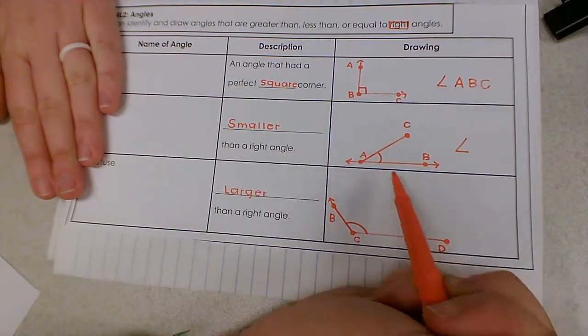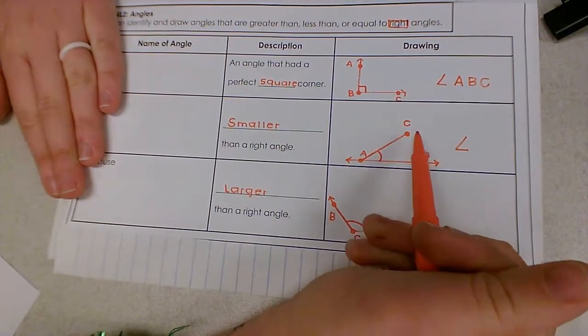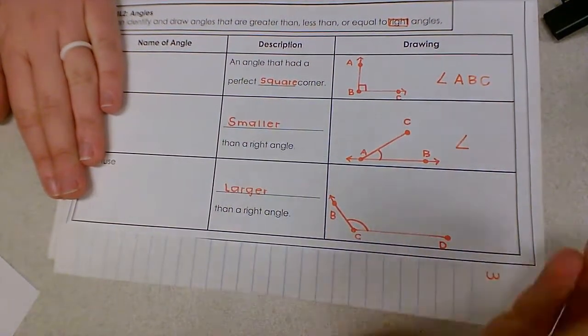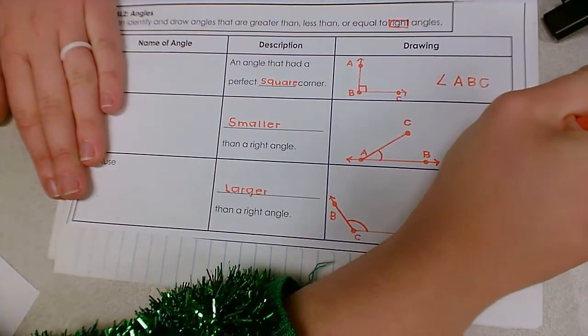Remember, we begin on one end to the other with the shared endpoint in the center. We can call this CAB or BAC. I'll call this CAB.